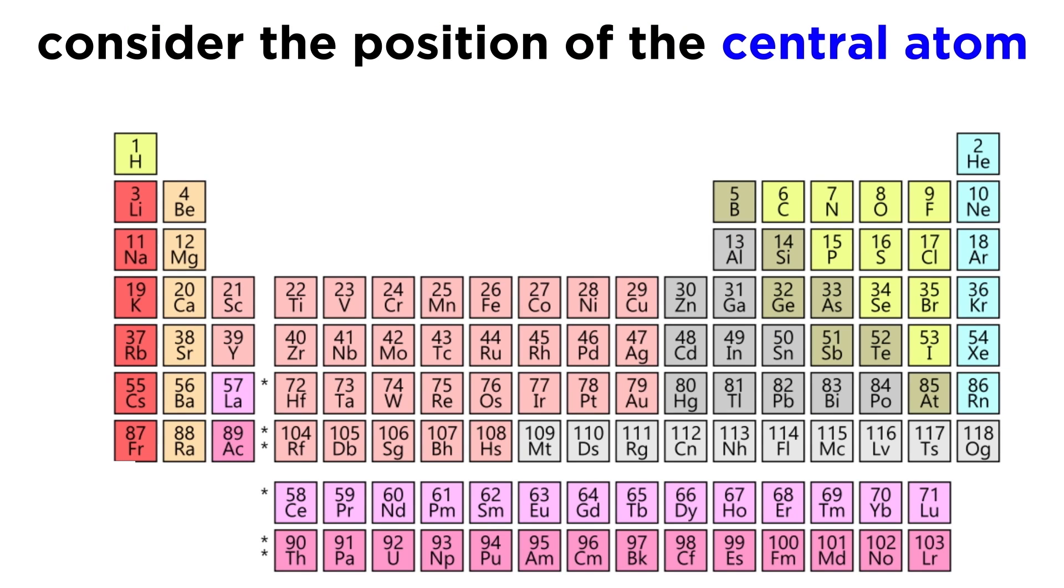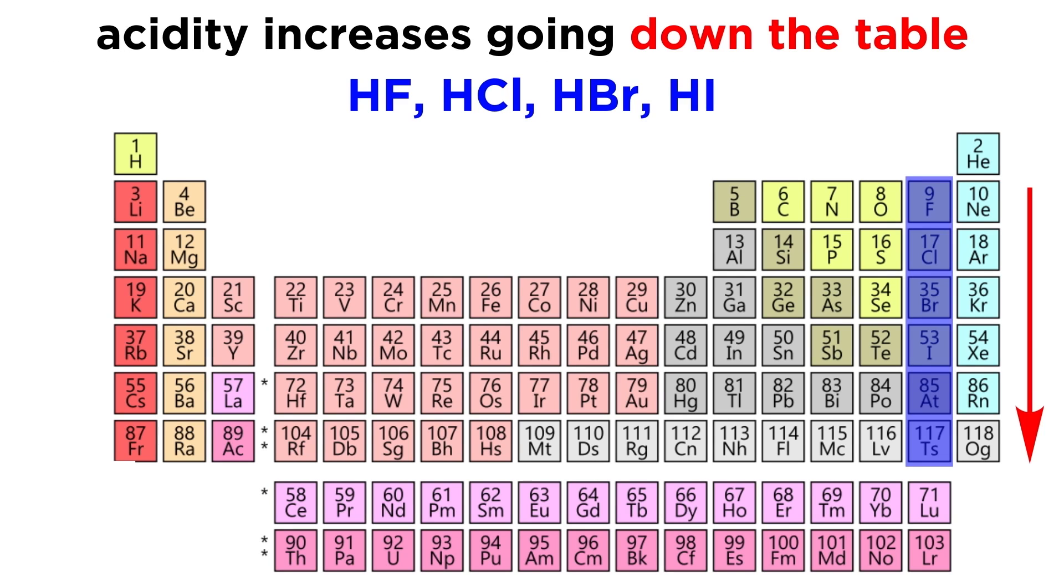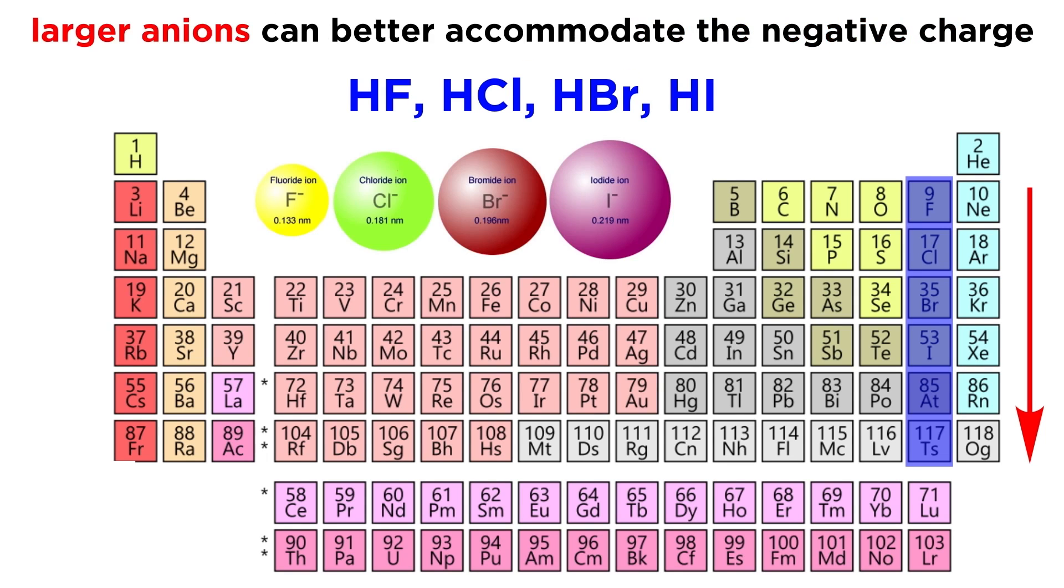First, we can note the location on the periodic table of the central atom in the acid or base. If we are looking at the binary acids in group 17, we can note that acidity increases going down the table. This has to do with the size of the anion that will be the conjugate base after deprotonation. The chloride ion is much larger than the fluoride ion, and this affects its ability to accommodate the negative charge.